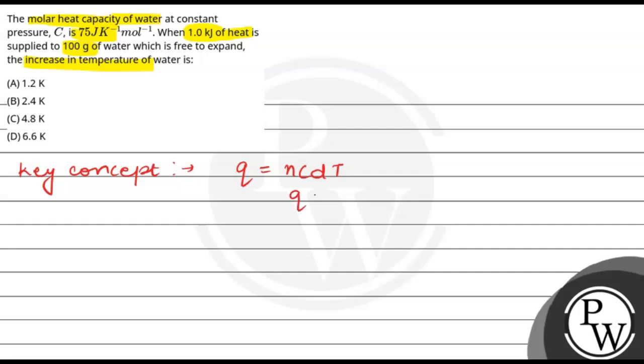So what is given? Q is 1 kilojoule, which is 1000 joules. C is 75 joules per Kelvin per mole.